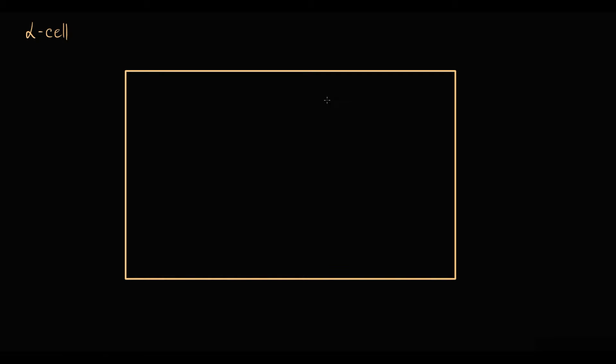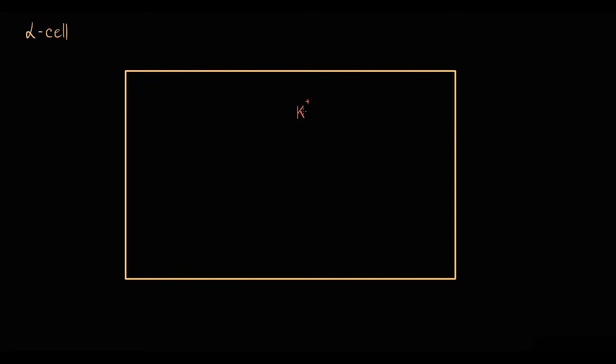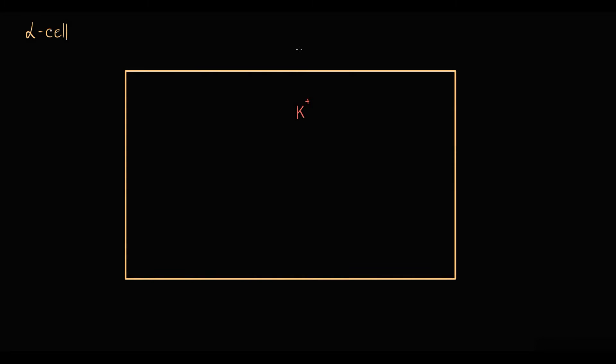Potassium is intracellular, meaning the concentration of potassium inside the cell is much higher than potassium concentration outside the cell. Calcium is extracellular, so calcium concentration outside the cell is much higher than inside the cell.